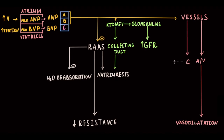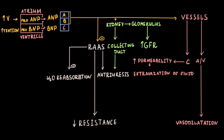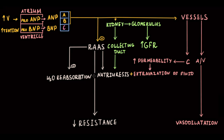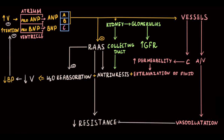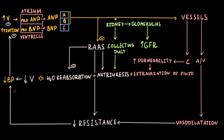ANP also increases capillary permeability, leading to extravasation of fluid into the interstitium, thereby decreasing blood volume. Together with natriuresis, inhibition of water reabsorption, and vasodilation, this leads to a decrease in blood pressure.